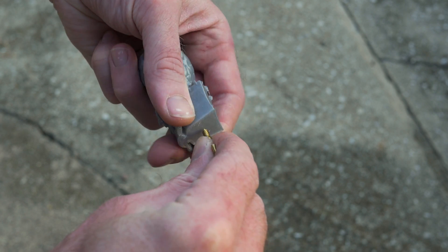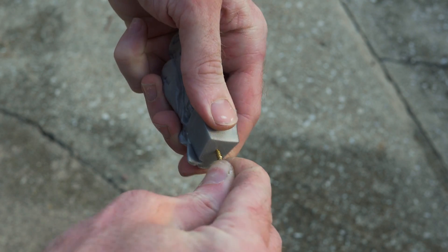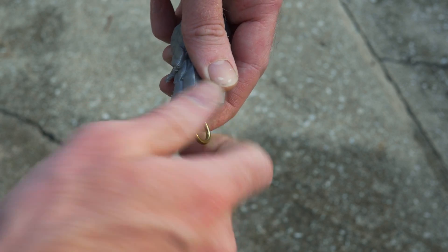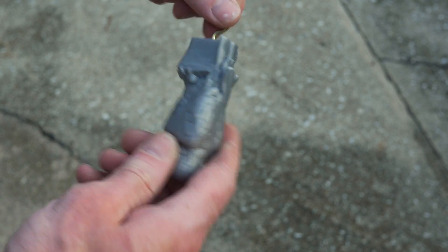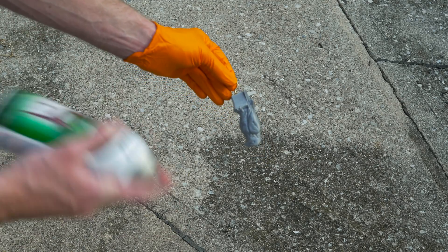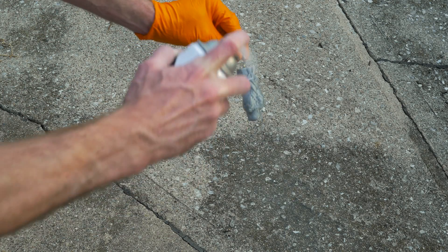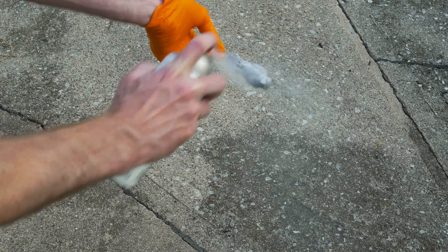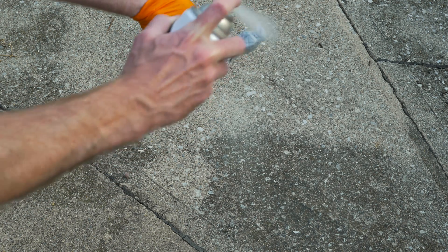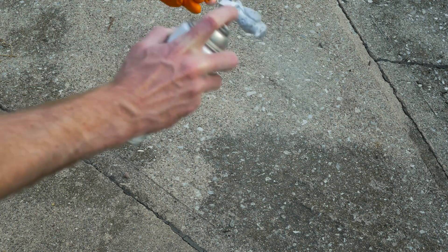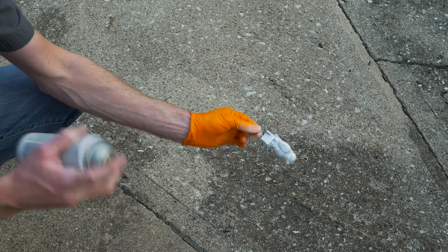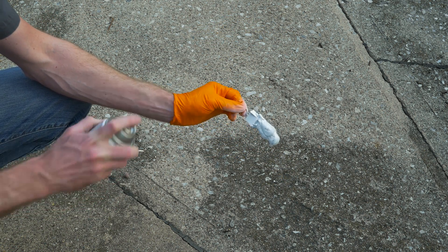I could cast this as is, but I'm going to use some primer to fill in any minor layer lines. Following up with a clear top coat to seal in the primer.